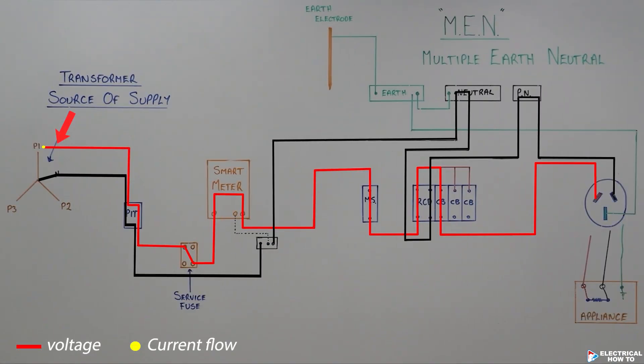Over here we've got our transformer, our source of supply. We've got our three phase, we're just tapping off single phase right now. And our current is flowing along in our active conductor, through the pit, in our underground consumer's mains, up through our service fuse, which is our short circuit protection.